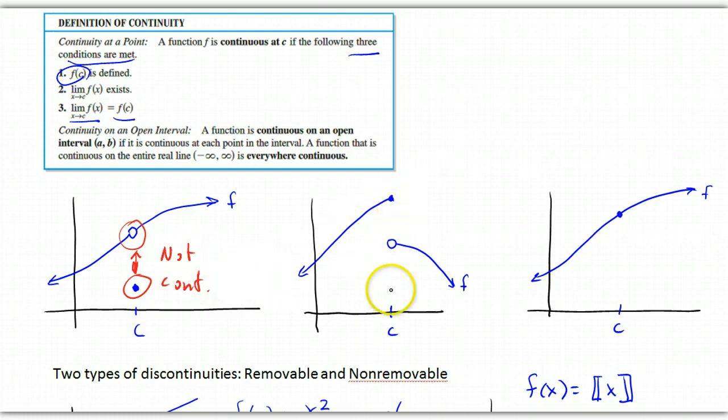Okay, now here, f of c is defined right here. But the limit does not exist. So, the second condition fails. So, this is not continuous.